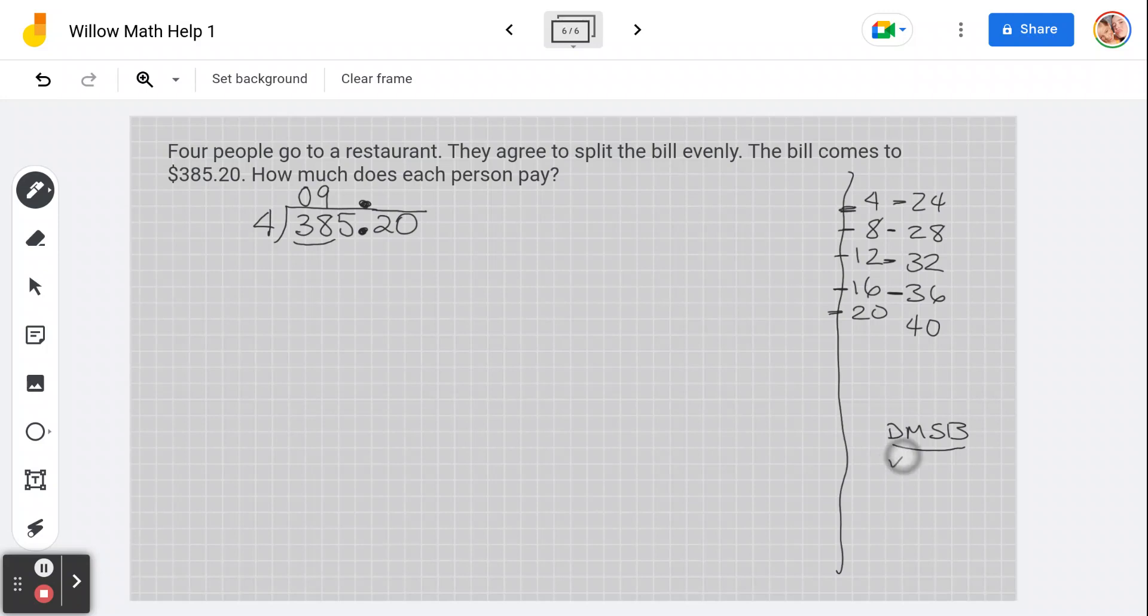So now I've divided. Now I'm going to multiply 9 times 4. Check over here at your chart if you want. It's 36. Now I'm going to subtract. 2 left over. Now I'm going to bring down. Here's my 5. Now I have 25.